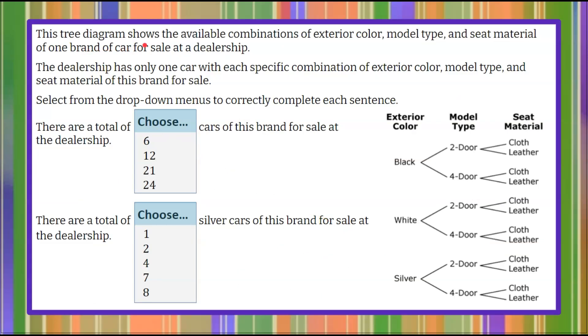We have this top tree diagram that shows the available combinations of exterior color, model type, and seat material of one brand of car for sale at a dealership. The dealership has only one car with each specific combination of exterior color, model type, and seat material of this brand for sale.